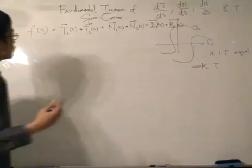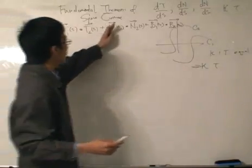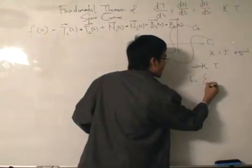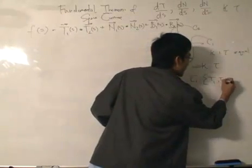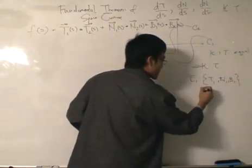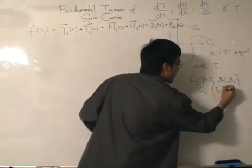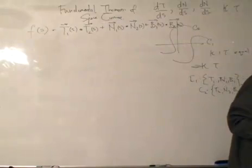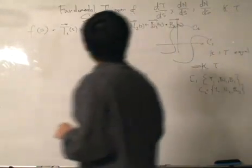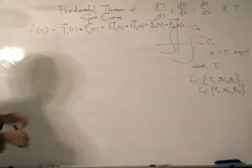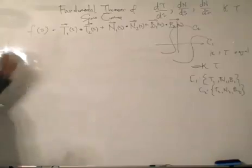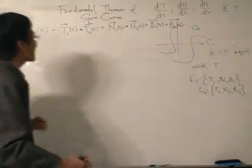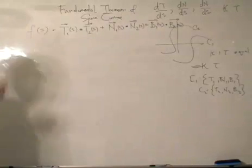The vectors T1, N1, and B1 describe curve C1, and T2, N2, and B2 describe curve C2. Honestly, I don't know how we initially arrive at this function, but you will see why in a minute. We are going to differentiate this function — think of it as a function f written in terms of arc length, since all these vectors are written in terms of arc length.